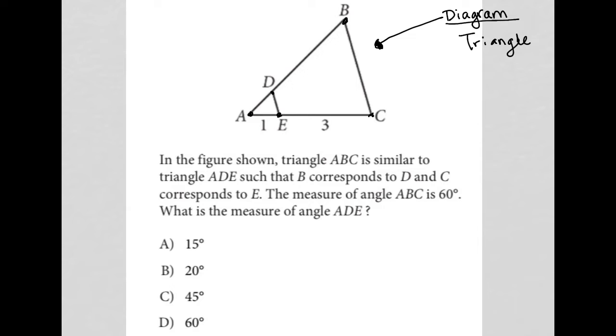But let's read the question and see. We also have some measurements here from A to E is 1, from E to C is 3, it looks like. Let's read the question and see what else we can figure out about this diagram. So the question says, in the figure shown, triangle ABC is similar to triangle ADE.